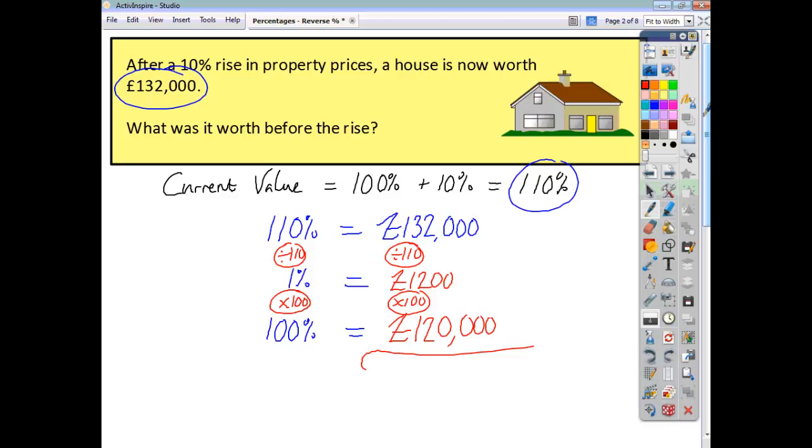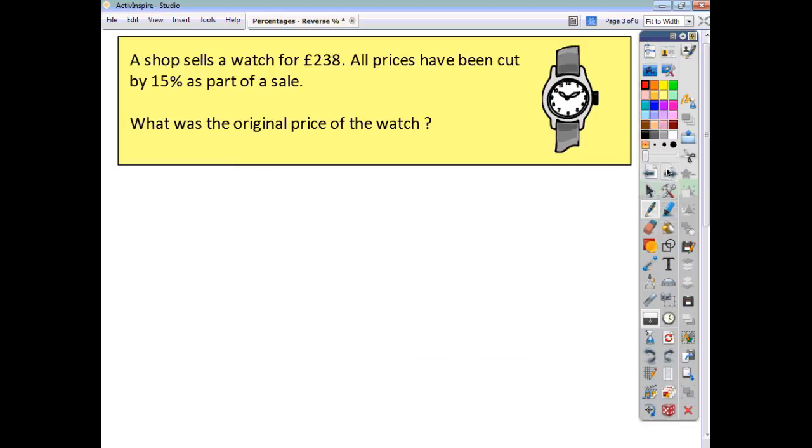Now, the main mistake people make with questions on this topic is they just assume that the percentage is a percentage of the current valuation. But it's not. It's a percentage of an unknown value. So you can't just launch into the question in that way. You've got to do it using this approach.